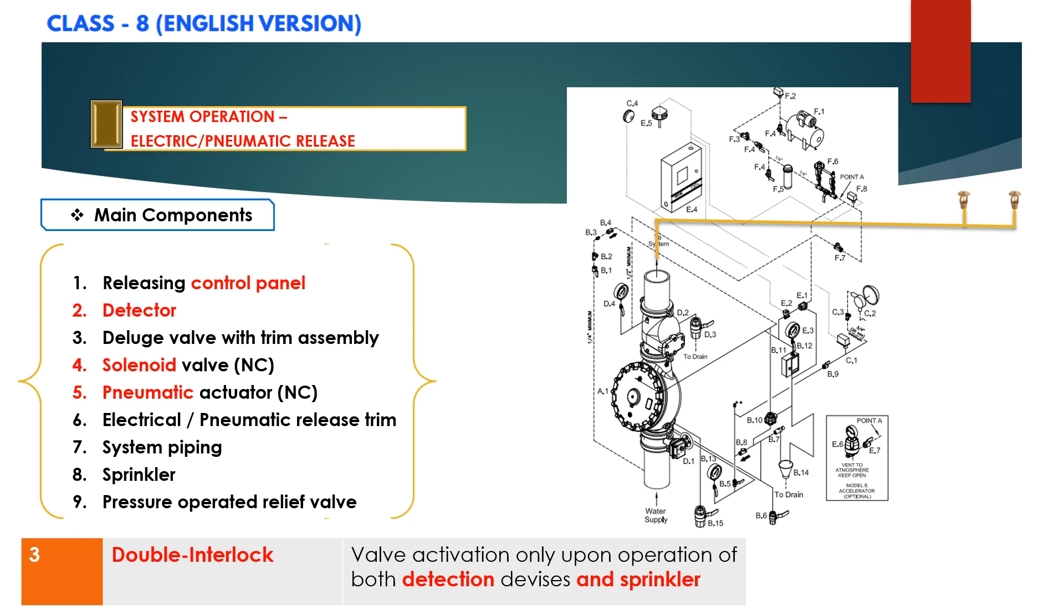An optional accelerator may be installed to accelerate the pressure loss from the sprinkler system to provide earlier alarms and or to allow the system to fill with water faster. An accelerator may be necessary to meet the system discharge requirements.